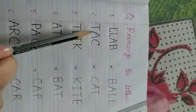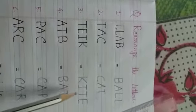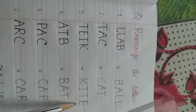Number 2, T-A-C. The answer is C-A-T, cat. Number 3, T-E-I-K. The answer is K-I-T-E, kite.